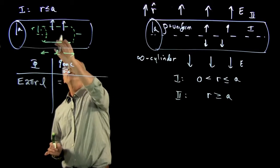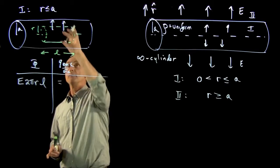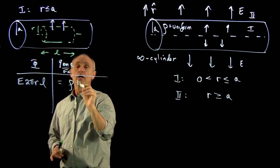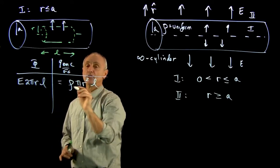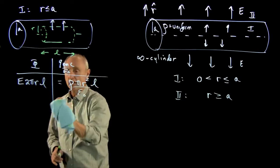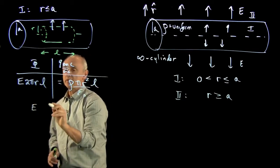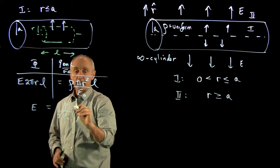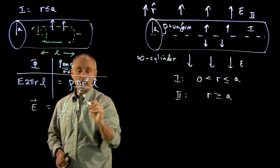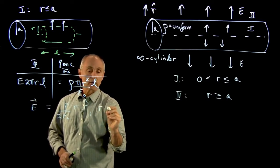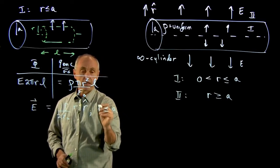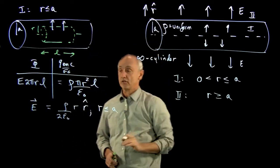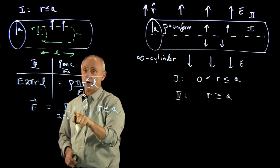The charge enclosed, because the density is rho, is just rho times the volume of the cylinder. The volume of the cylinder of radius r is the cross-sectional area πr² times the length l. Dividing by epsilon naught and solving, the l's cancel, and we get the electric field equal to rho over 2 epsilon naught times r, in the r-hat direction, for r less than or equal to a. Notice that this field grows like r inside.